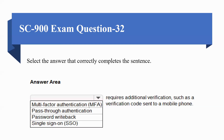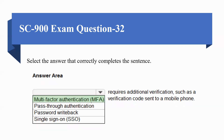Next question: select the answer that correctly completes the sentence. The options include multi-factor authentication, pass-through authentication, password writeback, and single sign-on. Which of these requires additional verification such as a verification code sent to a mobile phone? The correct option is multi-factor authentication.